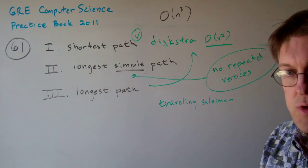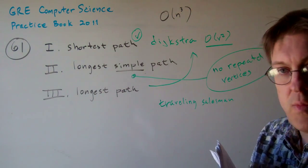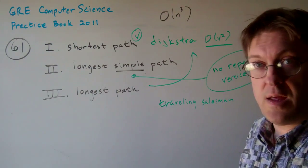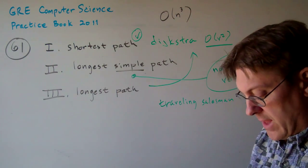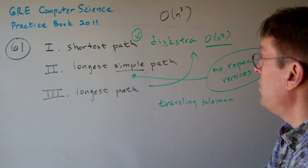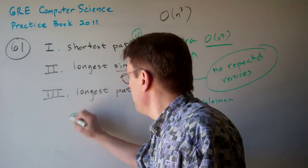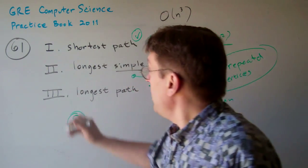And there's no solution in polynomial time that we know of. Not n to the anything. It's an exponential situation. So that's the answer to that. The answer to 61 is C, which is 1 and 3.